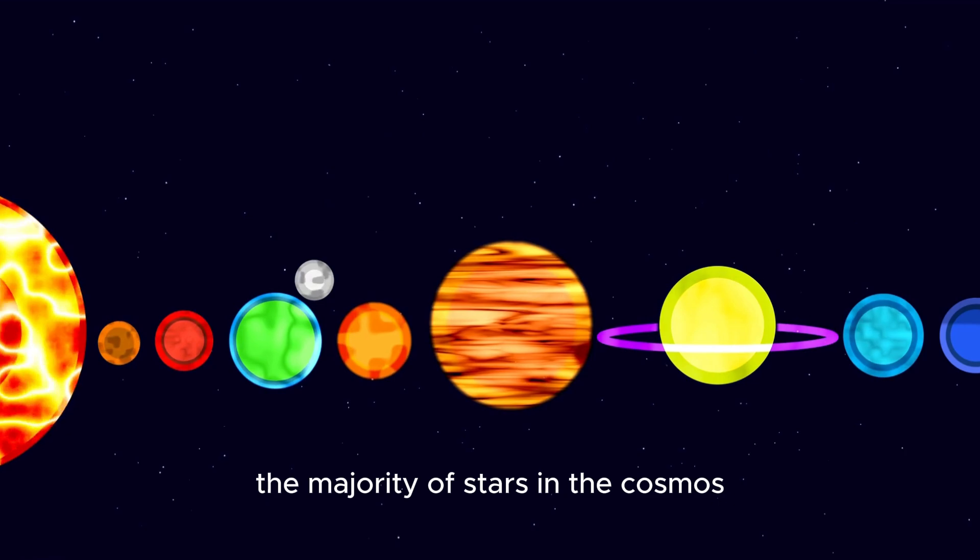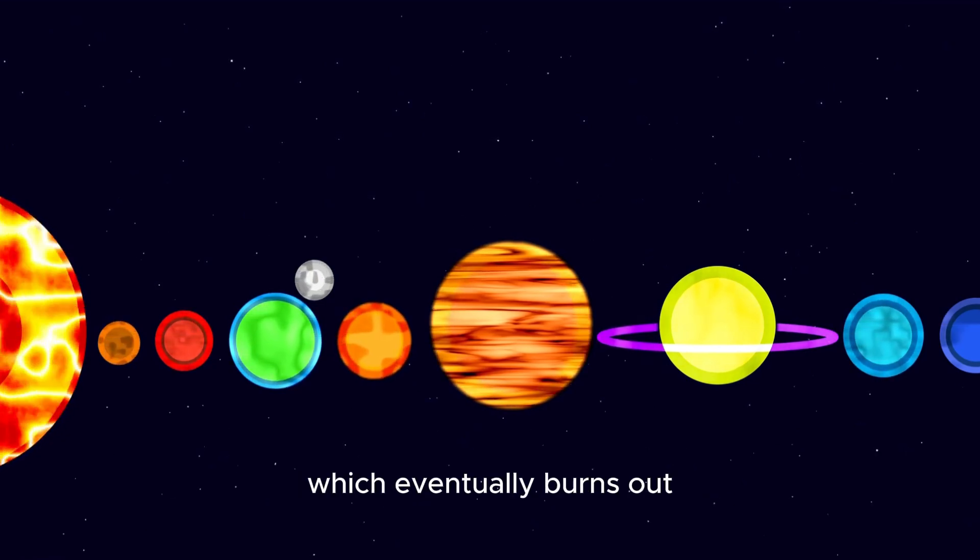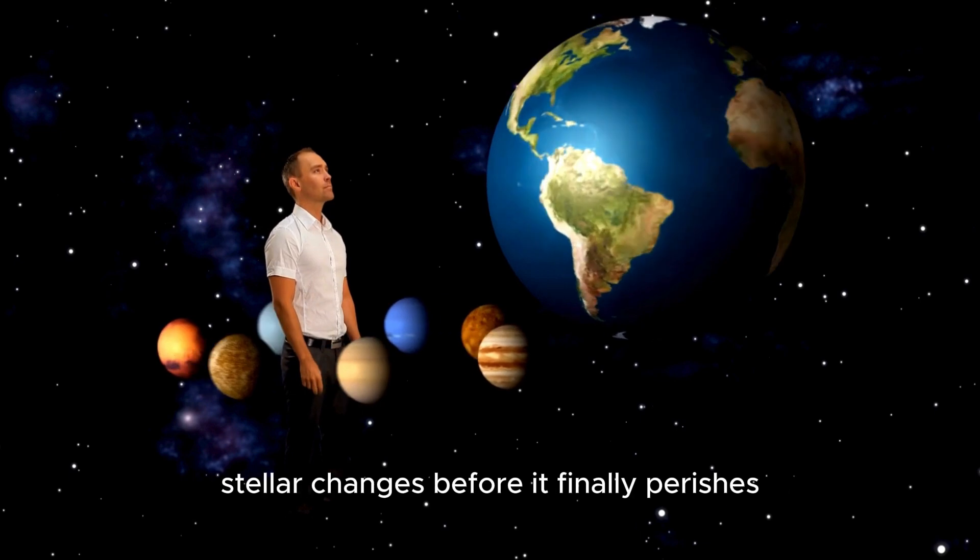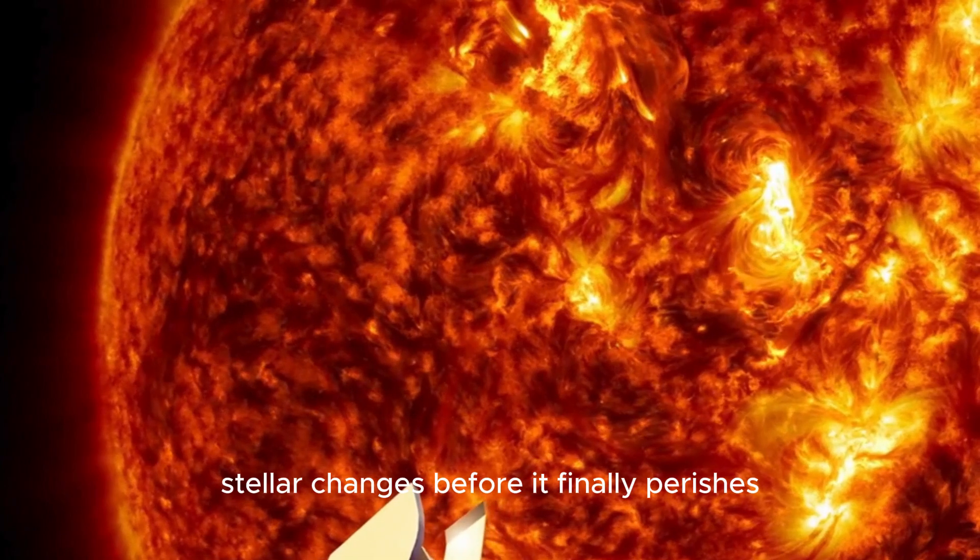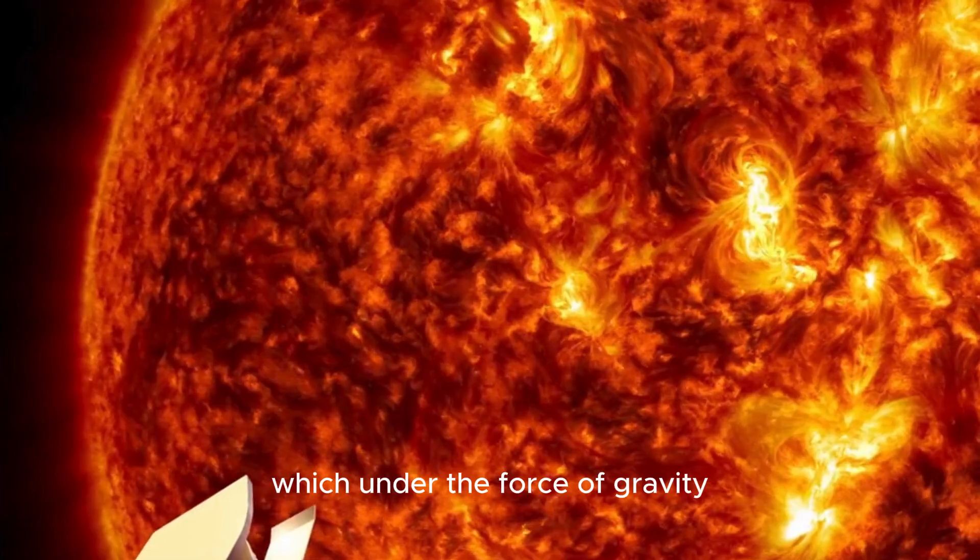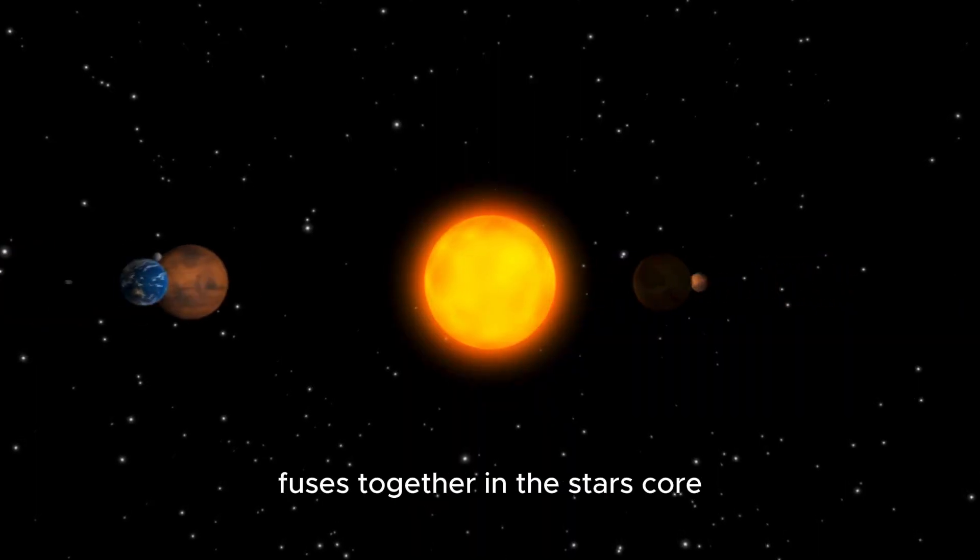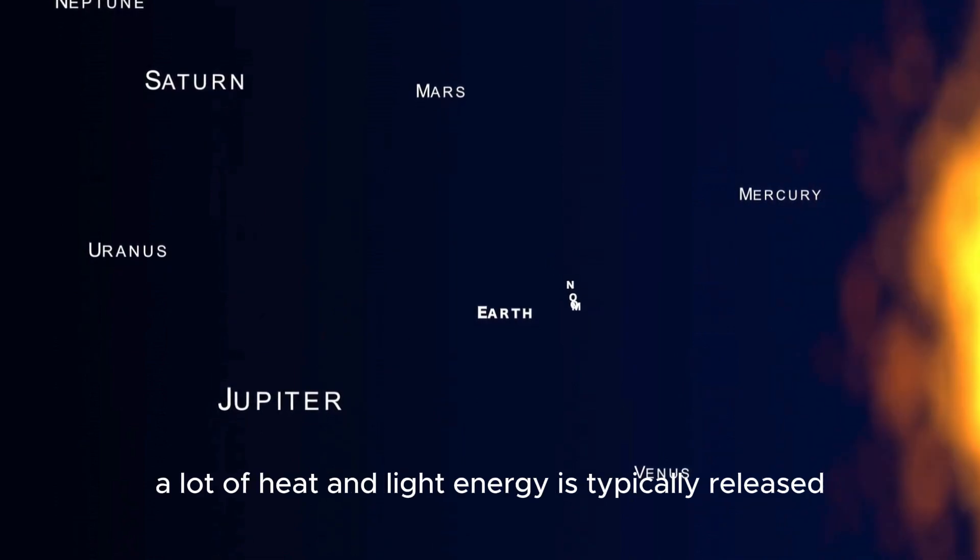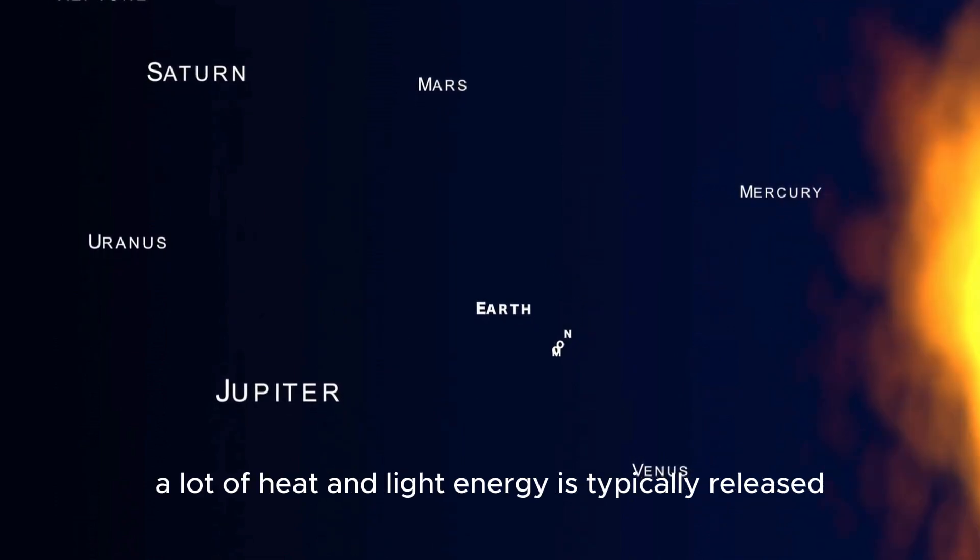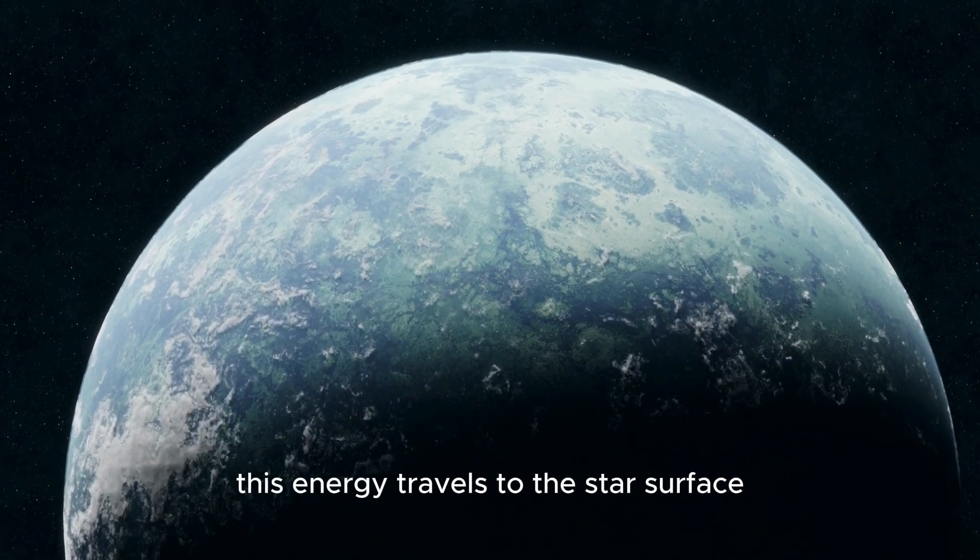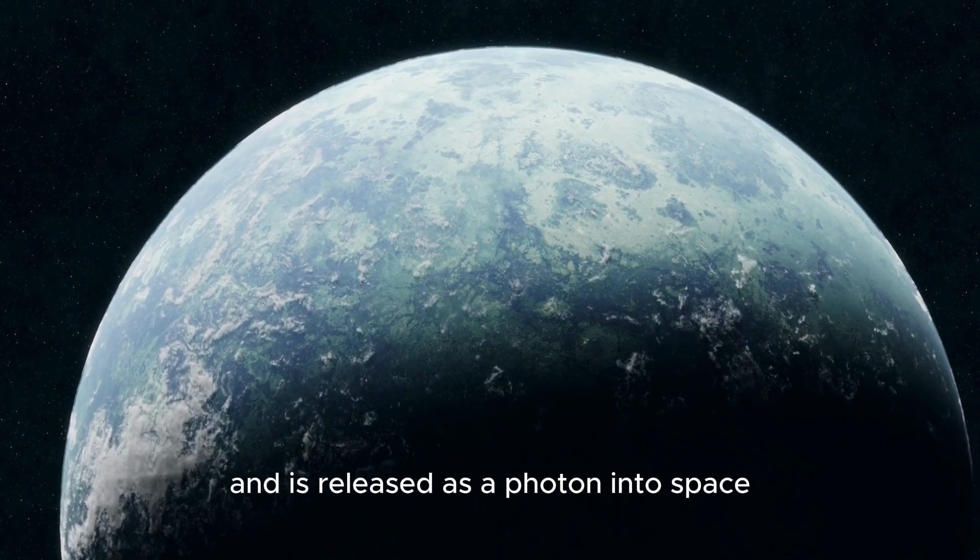The majority of stars in the cosmos are powered by nuclear fusion, which eventually burns out and causes a star to undergo a series of intriguing stellar changes before it finally perishes. When a star is born, it is made of hydrogen, which, under the force of gravity, fuses together in the star's core to create helium. In a nuclear explosion, a lot of heat and light energy is typically released during the fusion process. This energy travels to the star's surface and is released as a photon into space.